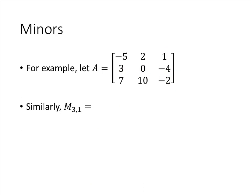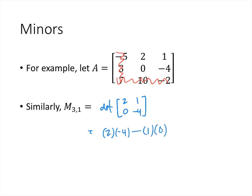Let's do one more minor just to practice. The minor M sub 3,1 means we eliminate row 3 and column 1 from the matrix, giving us the 2x2 determinant of 2, 1, 0, negative 4. That's 2 times negative 4 minus 1 times 0, which equals negative 8. So minors are going to be used to figure out the determinant of the larger matrix.